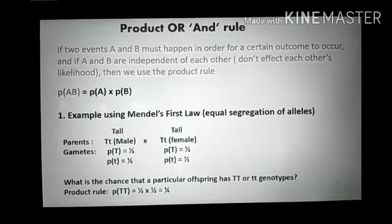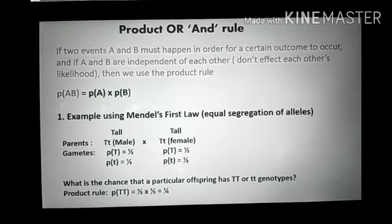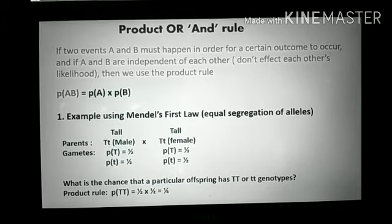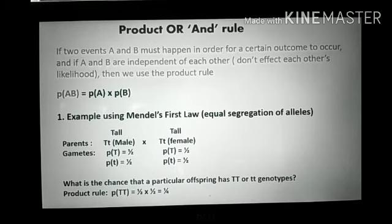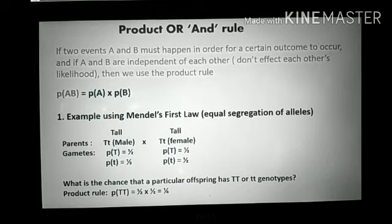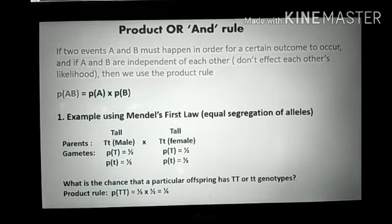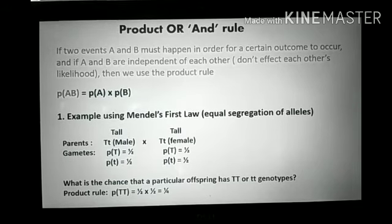We have seen this in the Punnett square and we need to learn it for solving questions. If the parents are heterozygous, the probability of getting a homozygous genotype — whether small t or capital T — is 1 by 4. By the product rule, we can calculate this.